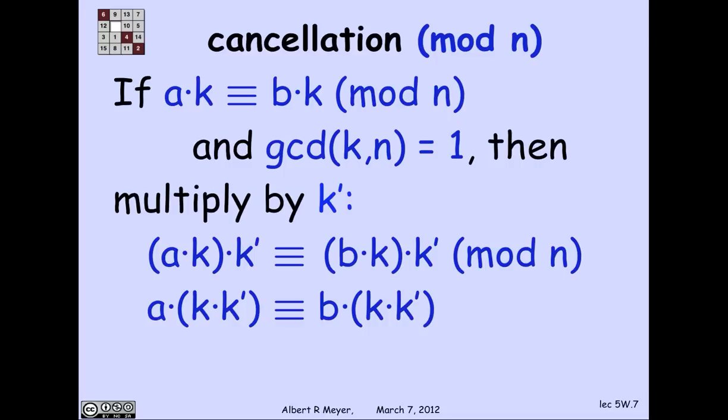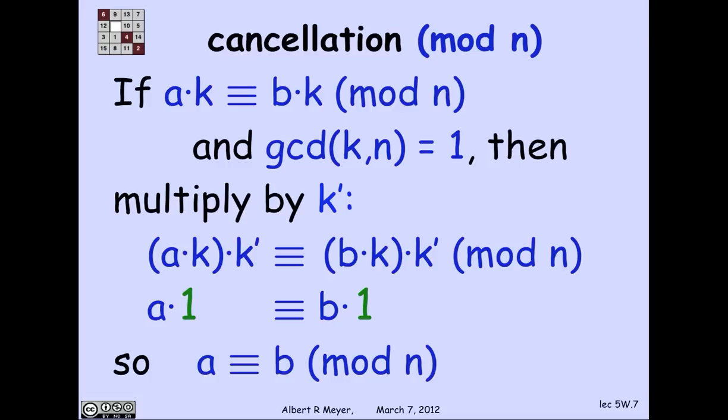and I get that the left hand side is a times k, k inverse, and the right hand side is b times k, k inverse. And of course, that's a times 1 is equivalent to b times 1. And so a is congruent to b mod n. So I can cancel in that case, trivially.